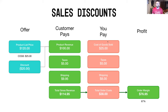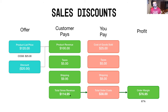On the cost side: COGS is $25 to produce the product, $5 in taxes which you collect and pass through to the government, and a shipping cost even though you're charging for it. Adding those elements up gives a total order cost of $38, leaving an order margin of $76.95 — about 67% when you divide $76.95 by $114.95.